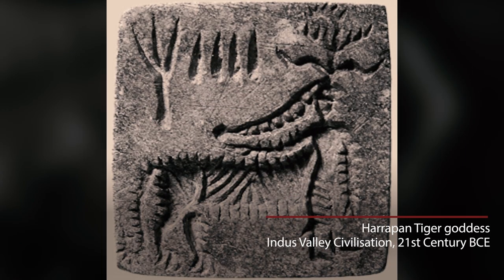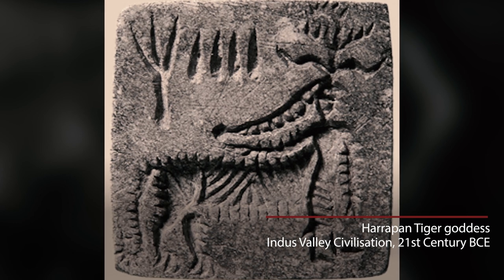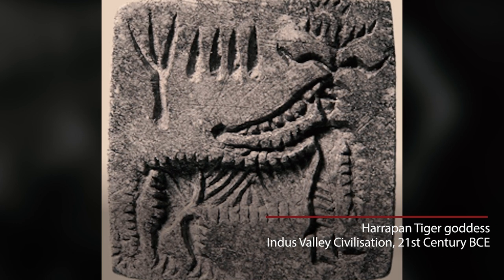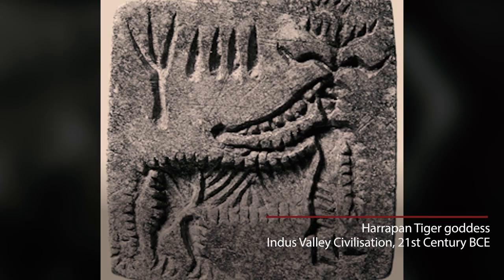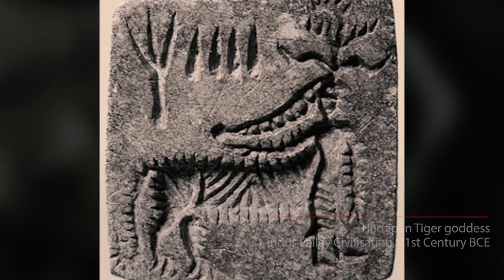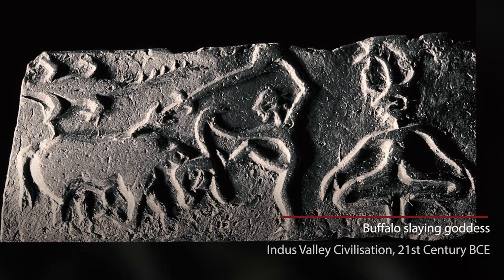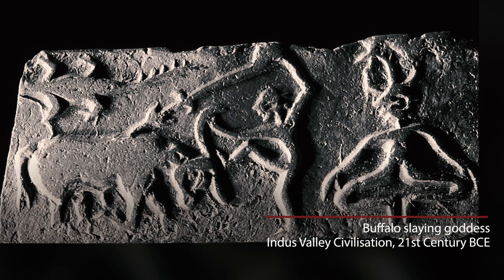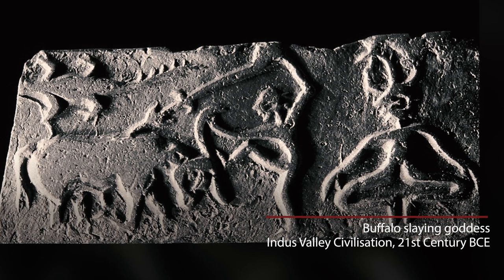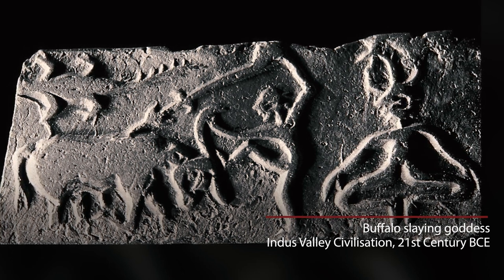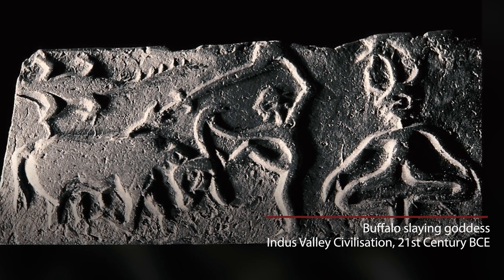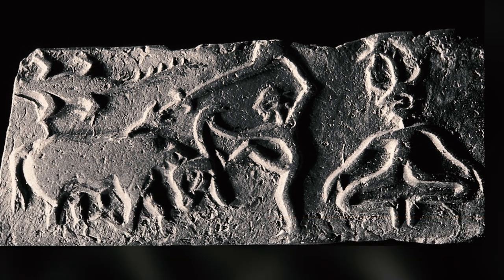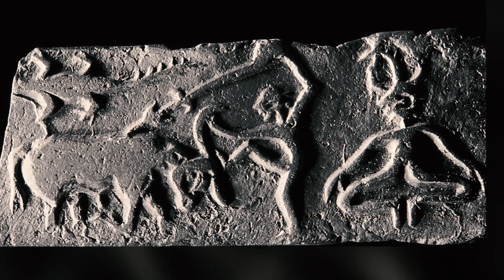In Harappan seals, which are over 4,000 years old, we see a goddess or god linked to tigers, and images of a buffalo being sacrificed. They are not together — they are on separate seals. We wonder whether this represents an old tribal practice of sacrificing the buffalo to the goddess, which may have inspired the image of Mahishasur Mardini.